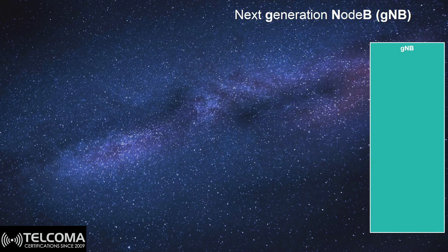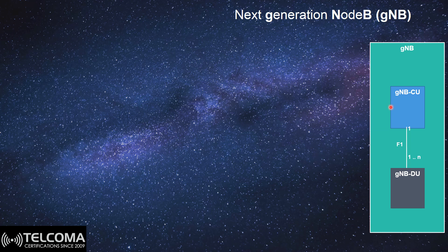With 5G and moving forward with open RAN, cloud network, self-defining network, and virtual network, we are trying to be more flexible. That's why in 3GPP, the gNodeB has been divided into two main parts: the gNodeB Central Unit and the gNodeB Distributed Unit. There is an interface between them called F1. A central unit can have many F1 interfaces connected to many gNodeB distributed units, and the distributed unit can cover one or many cells depending on the configuration.